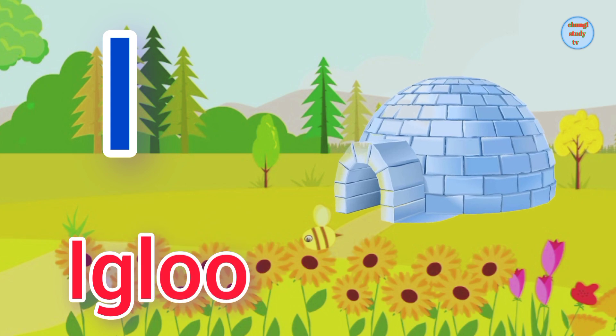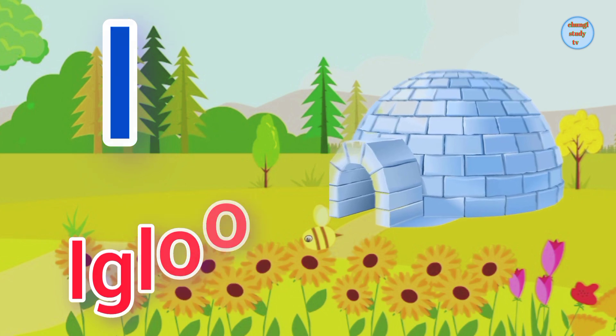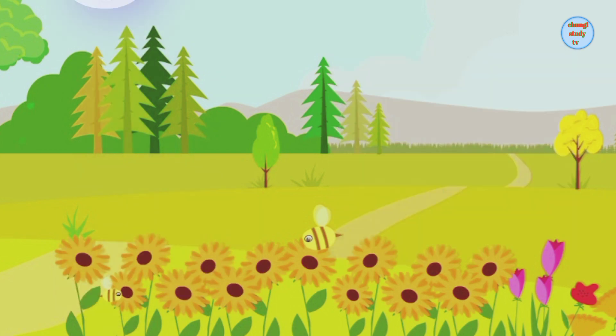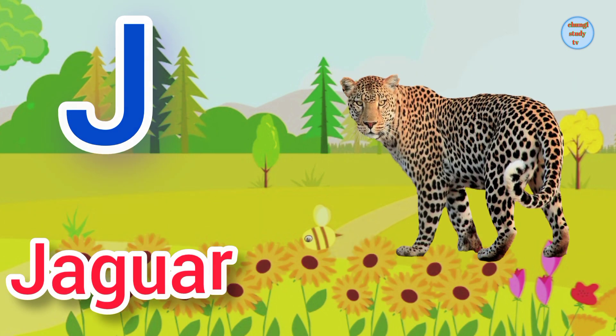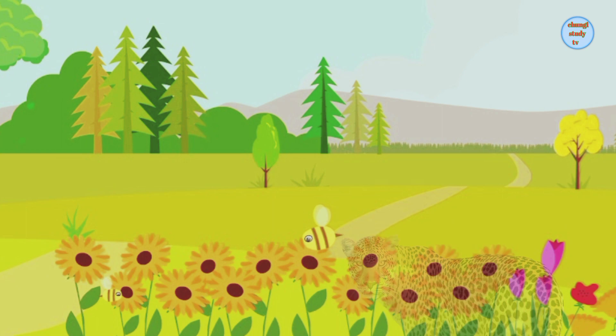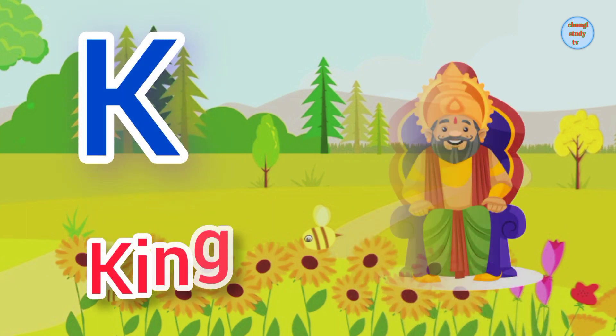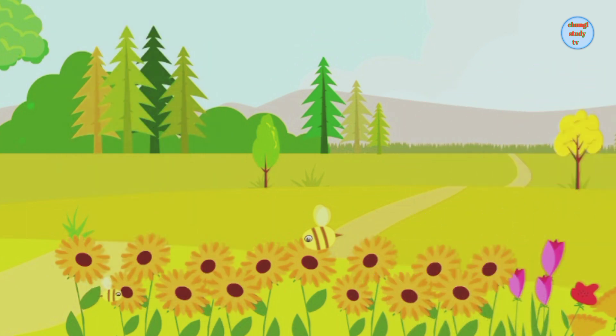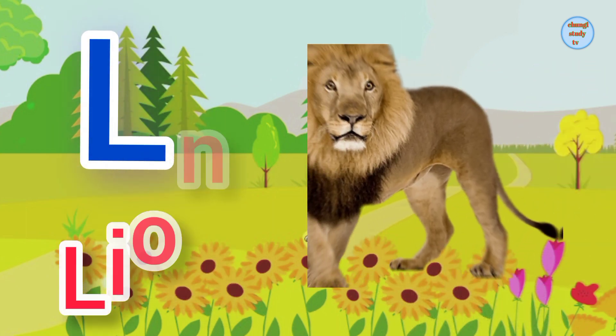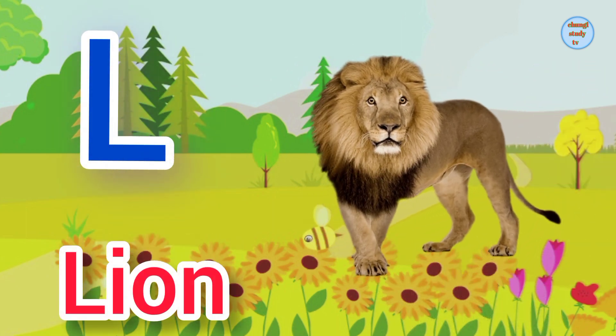Hi. I for Igloo. J for Jaguar. K for King. L for Lion.